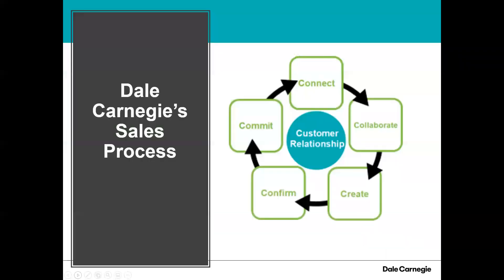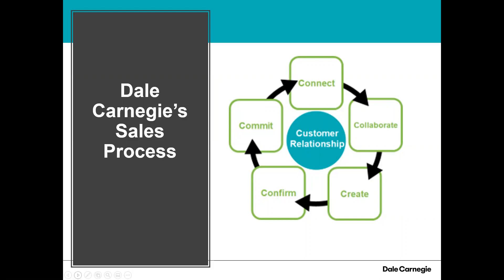Jumping into it: Dale Carnegie's sales process. This is the only time you're going to hear me talking about Dale Carnegie, but the connect is a key factor in our sales process. These are the stages of a sales transaction. You have to connect first, then collaborate with a client, then create. A lot of people don't understand that the first three steps are not selling — it's about building the relationship. The fourth and fifth steps are about selling, getting the commitment, and closing the sale. We spend two weeks out of an eight-week process just on the connect stage.